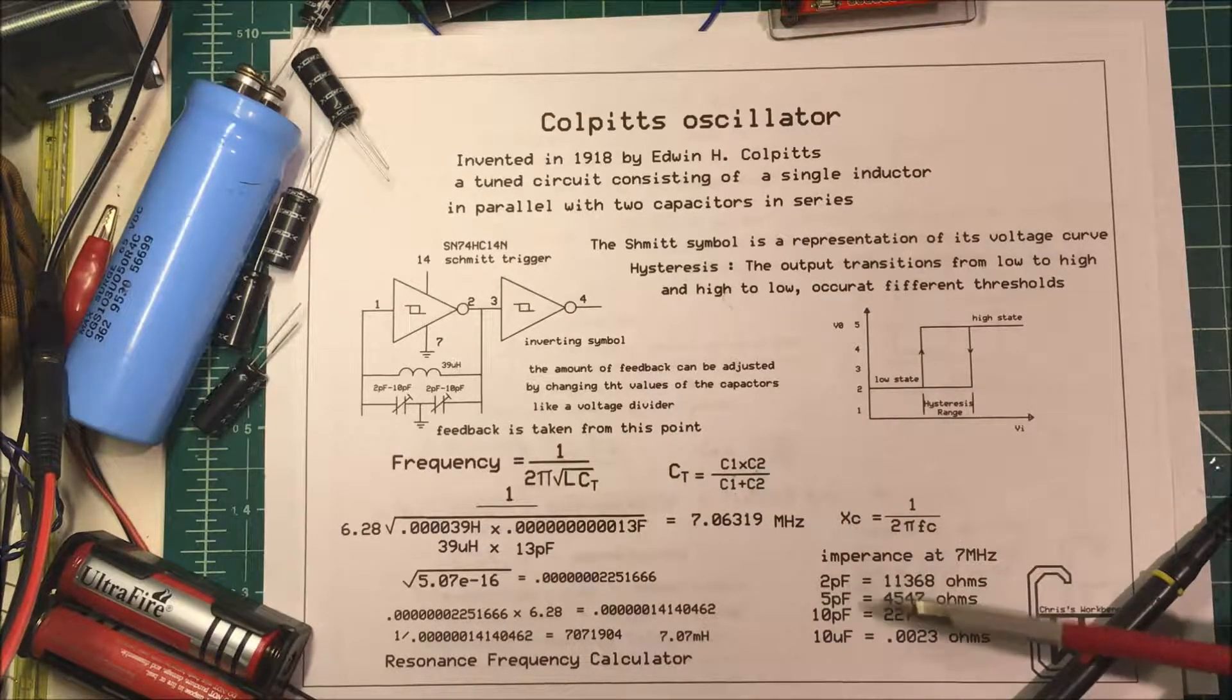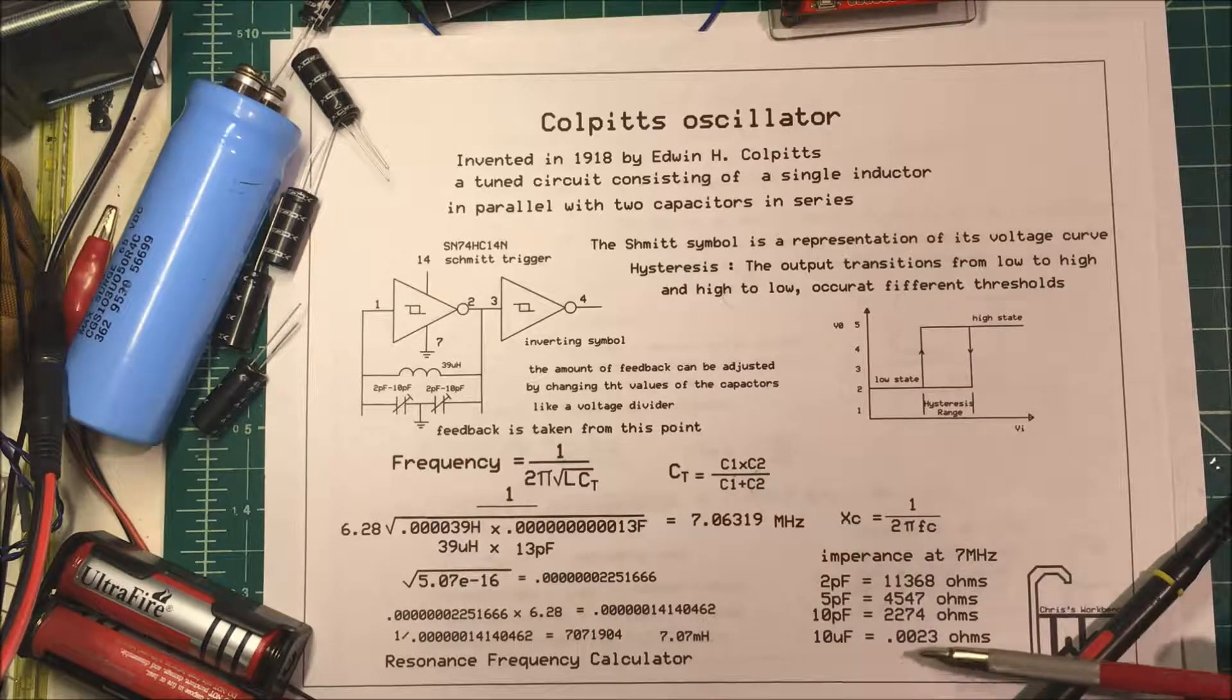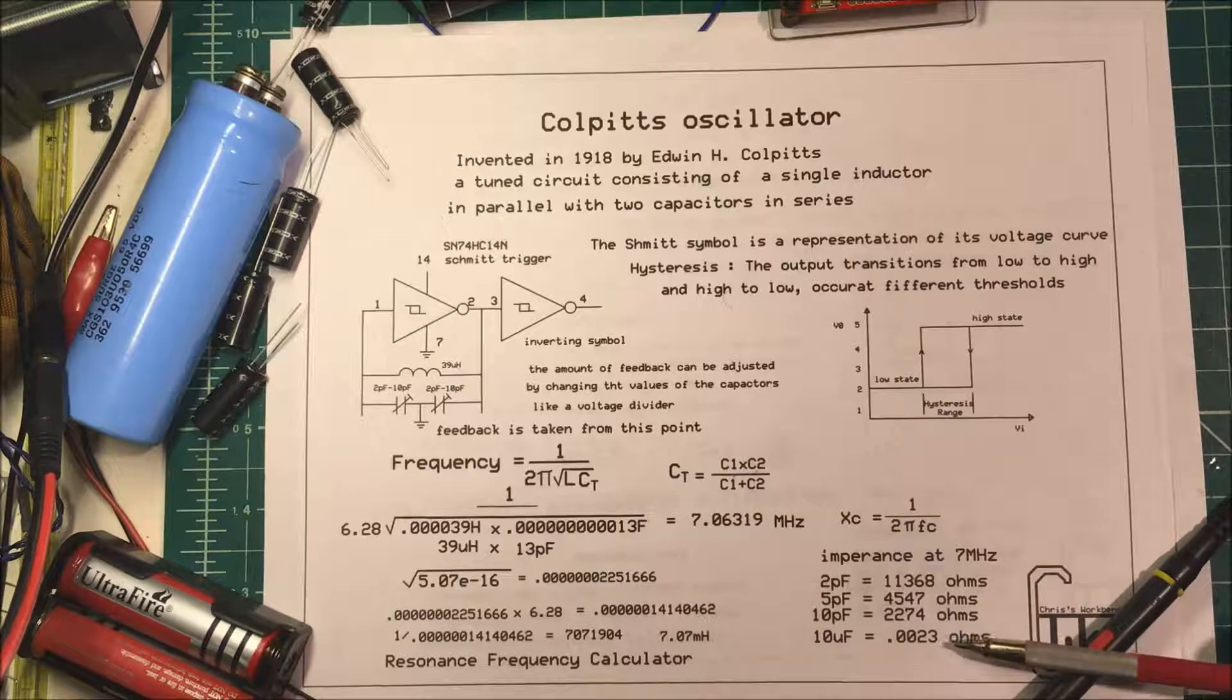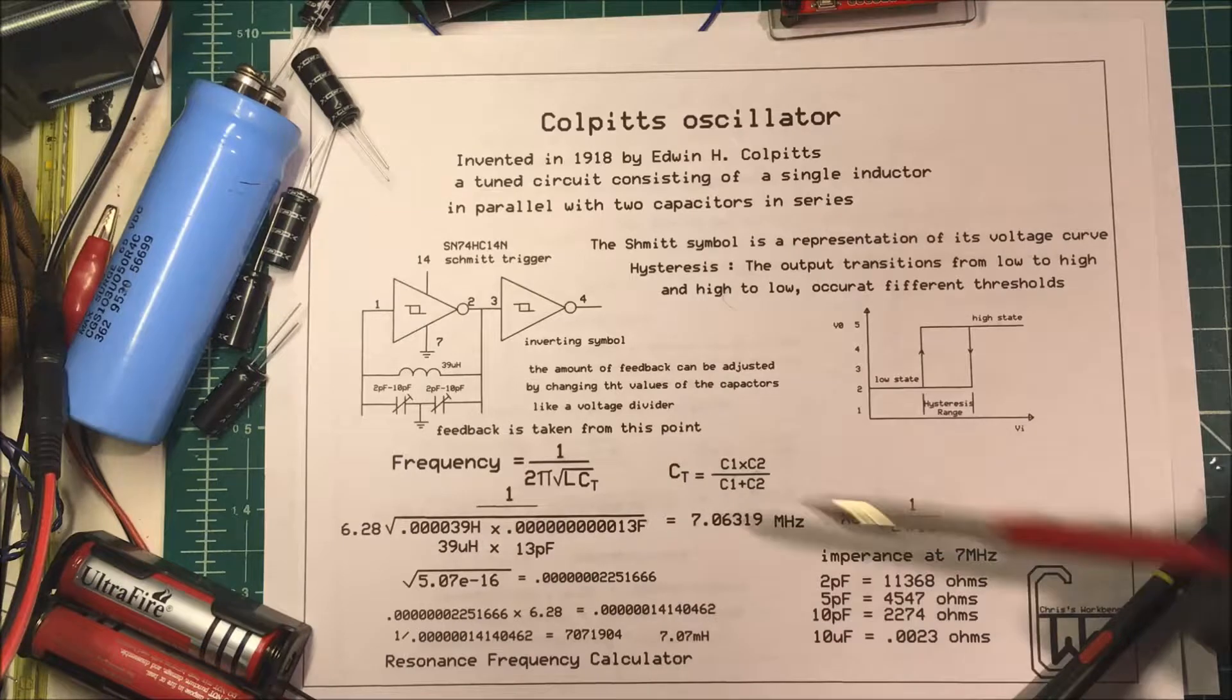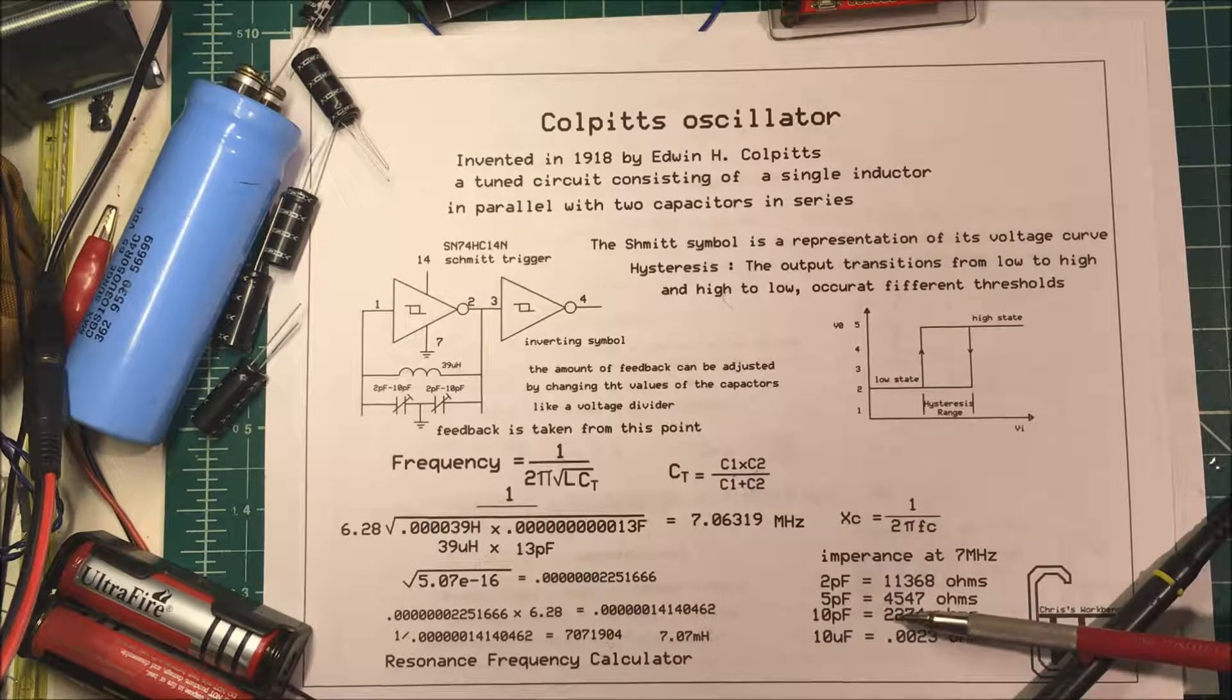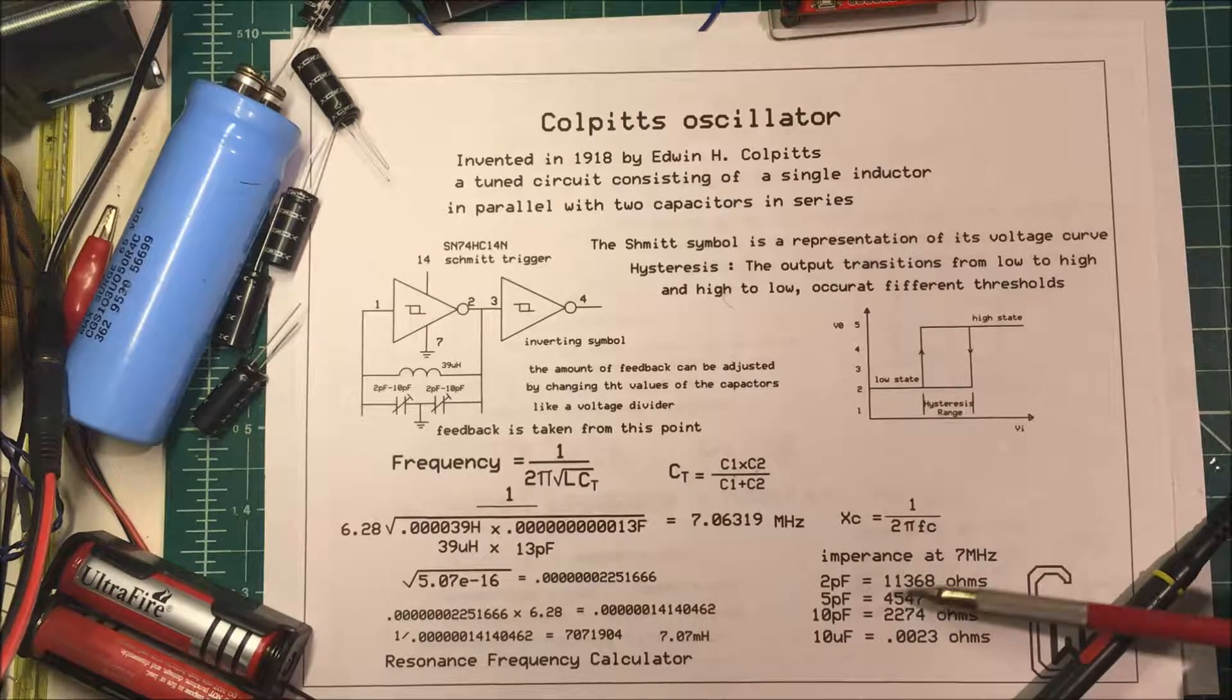So I know I want to be in the picofarad range because in microfarad at 7 megahertz it's only going to be 0.0023 ohms. So I need to have a voltage divider with the impedance up here. This 10 picofarads is going to be 2k and 5 is going to be about 4k ohms.